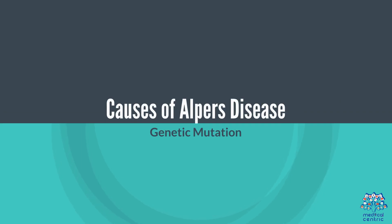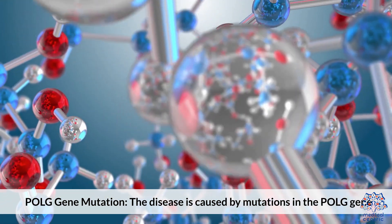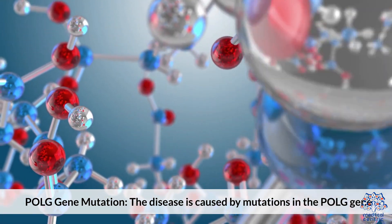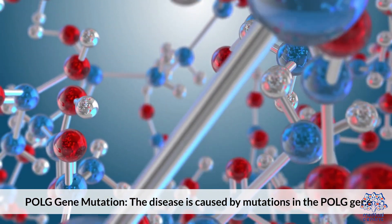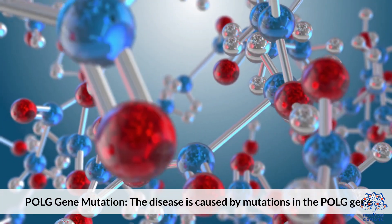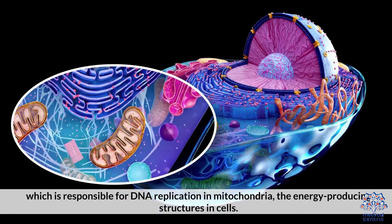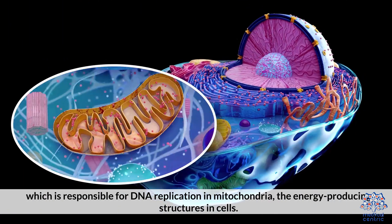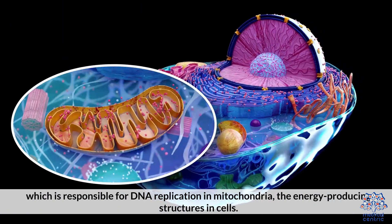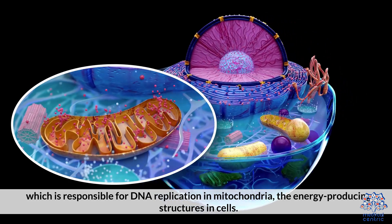Causes of Alper's disease: The disease is caused by mutations in the POLG gene, which is responsible for DNA replication in mitochondria, the energy-producing structures in cells.